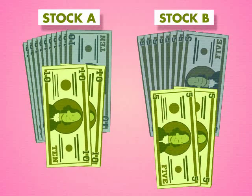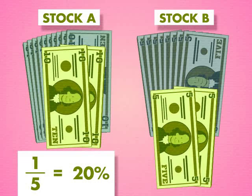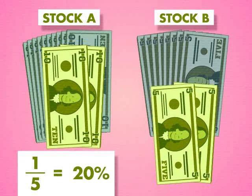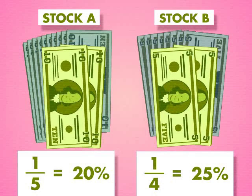The amount of money gained for Stock A is one-fifth, or 20%, of the original amount. For Stock B, the amount of money gained is one-fourth, or 25%, of the original amount.